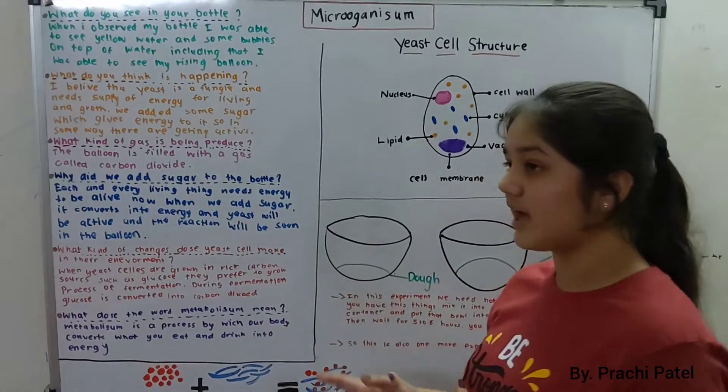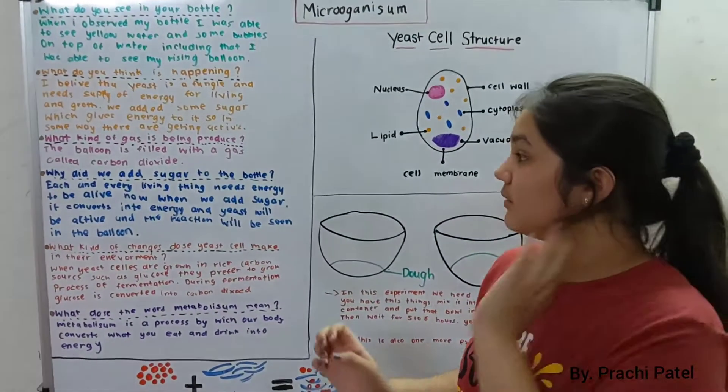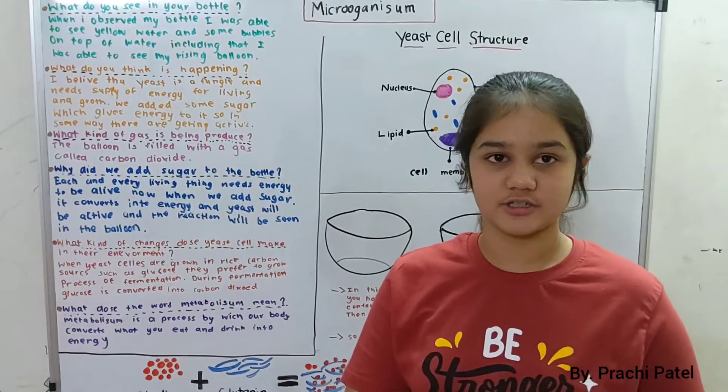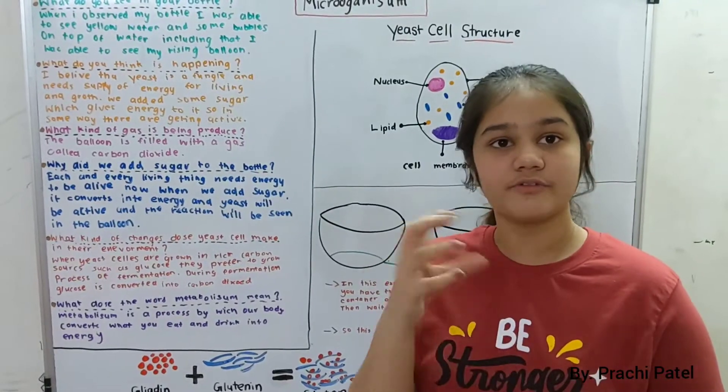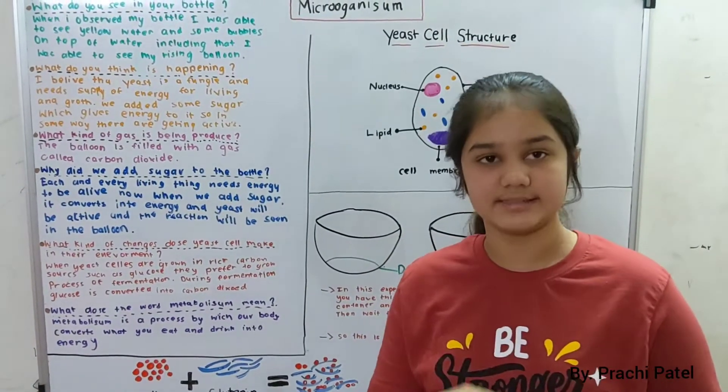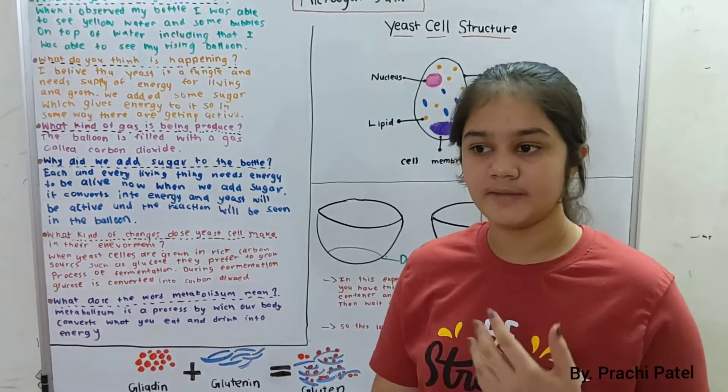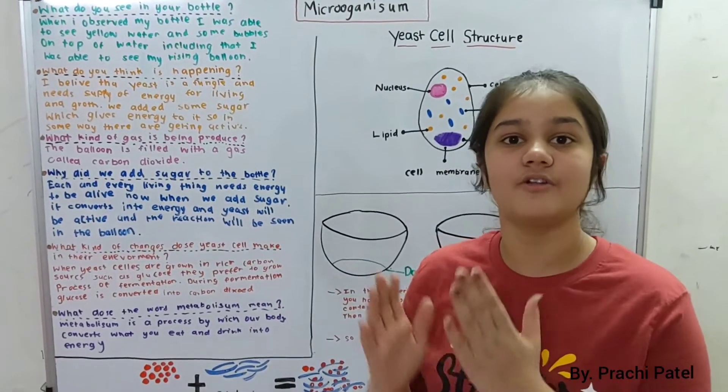During fermentation, glucose is converted into carbon dioxide. We add sugar to it, so sugar is converted into glucose. And because glucose is added to yeast, it is growing through a process called fermentation.